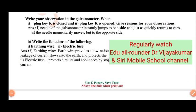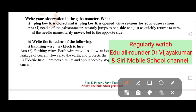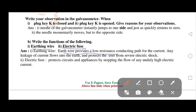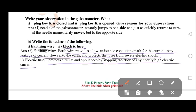Write the function of the following: earthing wire and electric fuse. Earth wire provides a low resistance conducting path for the current. Any leakage of current flows into the earth and protects the user from severe electric shock. Electric fuse protects circuits and appliances by stopping the flow of any unduly high electric current.